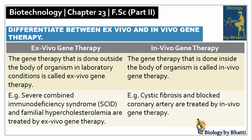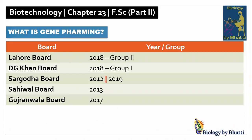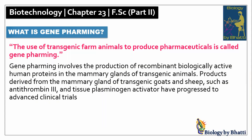Short question number eight: What is gene farming? Past paper references: Lahore board 2018 group 2; DJ Khan board 2018 group 1; Sargoda board 2012 and 2019; Saiwal board 2013; Gujranwala board 2017. Gene farming is the use of transgenic farm animals to produce pharmaceuticals. Foreign genes are inserted into animals such as cattle, converting them into transgenic animals. Pharmaceuticals are then produced in their bodies, obtained most importantly through milk or urine from those transgenic animals. This procedure is called gene farming.